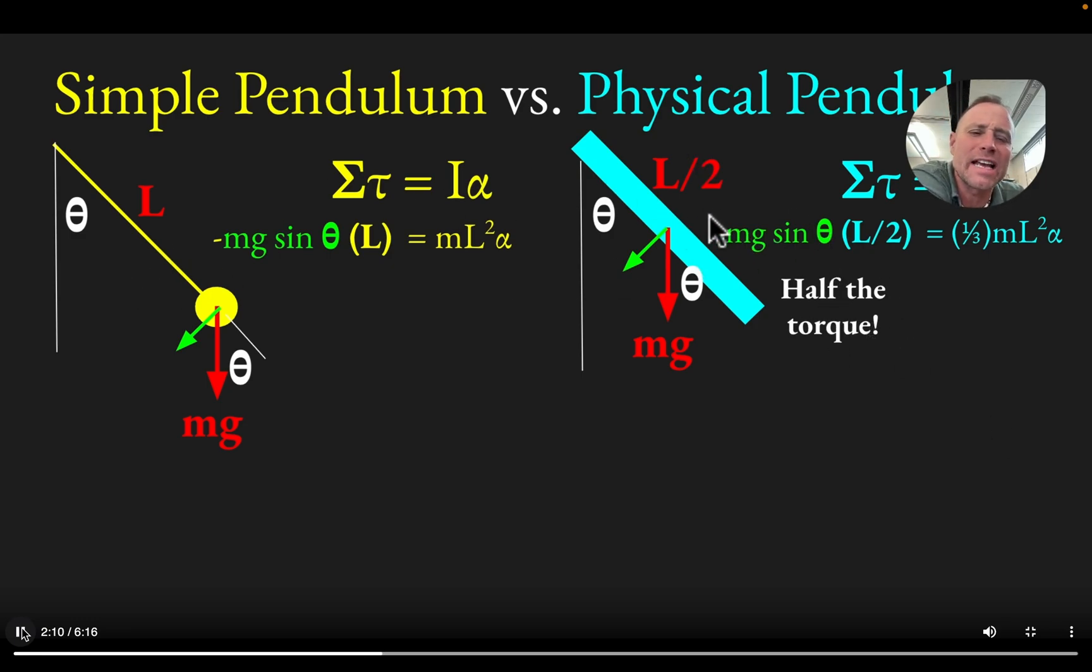Well, assuming the masses were the same, later we'll see the mass will cancel out of consideration, but for now we could think of it as if the masses were the same, there'd be only half the torque on the physical pendulum side. But making up for the fact, or more than making up for the fact that there's half the torque is it's only got one third of the rotational inertia. The moment of inertia of a stick about the end is one third ML squared.